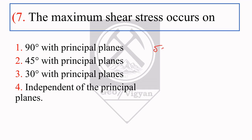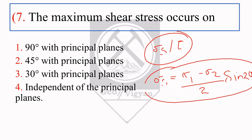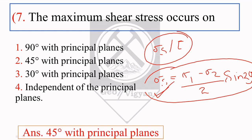The next question is: the maximum shear stress occurs on? Maximum shear stress is denoted as sigma-s or tau. The equation for sigma-s is (sigma-1 minus sigma-2) / 2 × sin(2θ). When you put different values of theta, you get different values of sigma-s. When theta equals 45 degrees, you get the maximum value of sigma-s. So the right answer is 45 degrees with the principal plane.